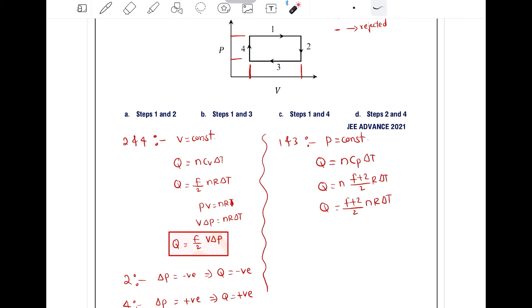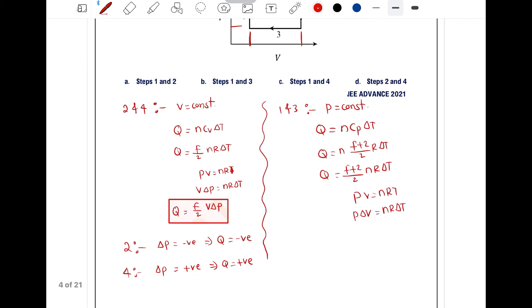Again, we do not have knowledge about temperature for processes 1 and 3, but we know that volume is changing in these processes. So again we can use PV equals NRT. If we differentiate, then pressure into ∆V equals NR∆T. So the formula will be Q equals F plus 2 by 2 into P∆V.